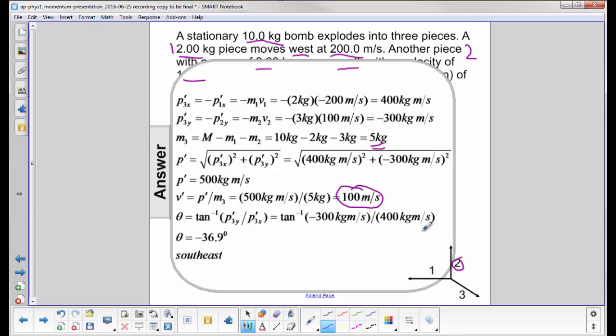All that remains now is to find the angle theta. Let's just draw right here. This is the theta I'm trying to find. So that would be the tangent of p3 y, that's this here, opposite, divided by p3 x. And this angle will be 36.9 degrees.